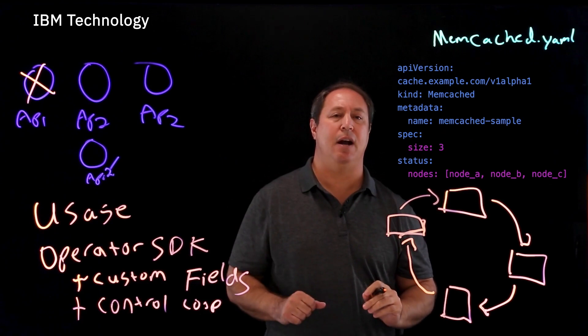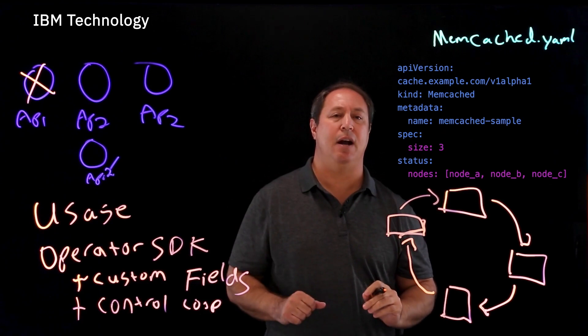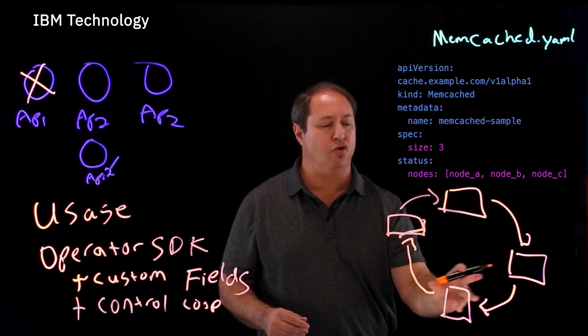So now we've got our custom fields taken care of thanks to the operator SDK. It gives us a lot of skeleton code. We do need to fill in our control loop, our reconcile loop. But once we have all that filled in,